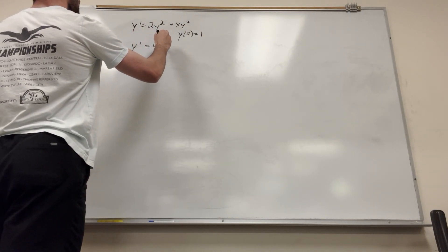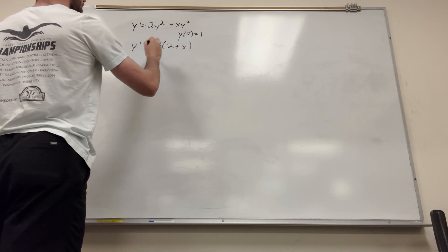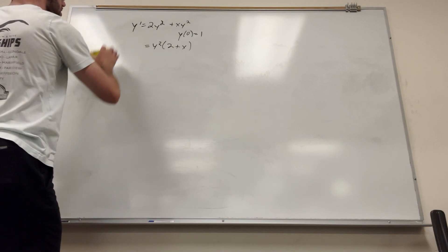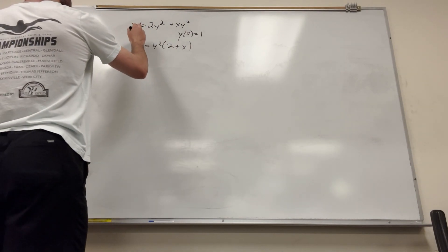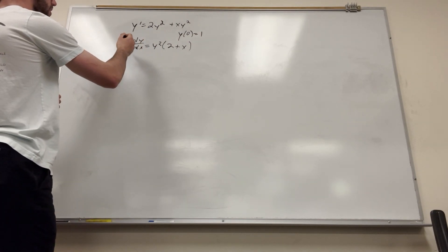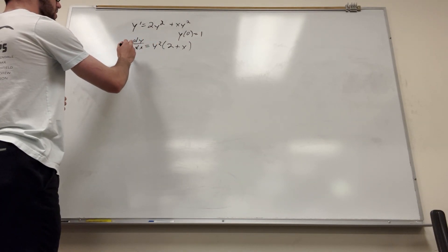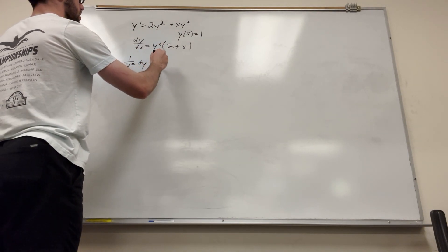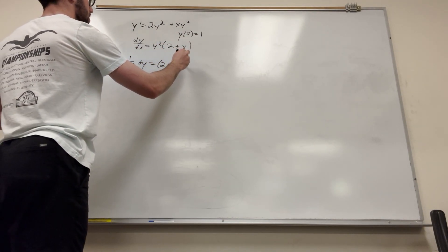So this is going to be y squared, obviously, 2 plus x, and then we can divide by y squared. I'm going to write this also dy dx because I like it more like this for this method. So then we're going to move this over. So 1 over y squared dy is equal to 2 plus x dx.